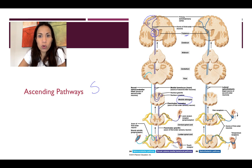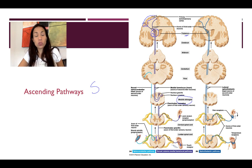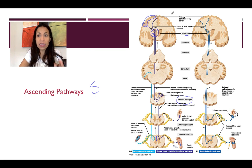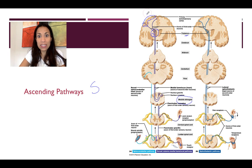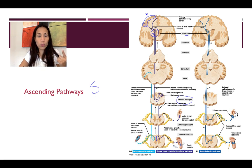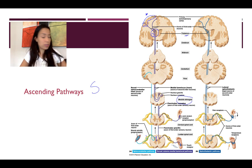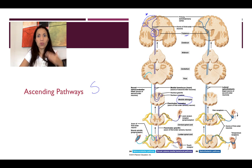The second neuron synapses with the third neuron, which finally delivers the information to the cerebral cortex — specifically the gray matter. The general sensory information arrives at the parietal lobe, specifically in the post-central gyrus, in the primary somatosensory cortex. Now that information has reached these higher levels, this is when we realize somebody is tickling our foot with a feather, or there is conscious movement of skeletal muscles and joint capsules. That's when we realize what's going on.